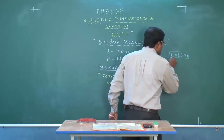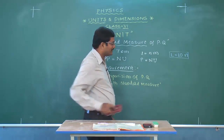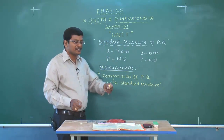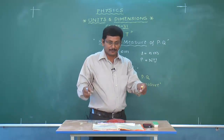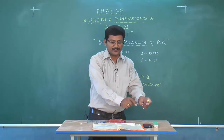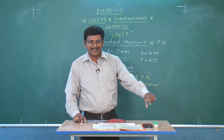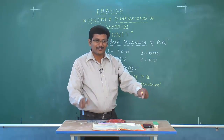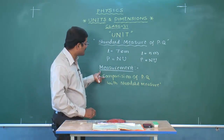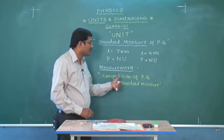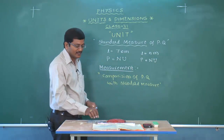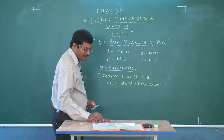Going back to the potatoes example: the standard measure is 1 kg weight, and we check how many potatoes weigh equal to that 1 kg weight. That is measurement — comparison of a physical quantity with the standard measure. Similarly, length L = 7 centimeters follows P = N × U.